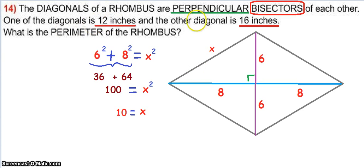So if the diagonals are 12 and 16, then half of 12 is 6, half of 16 is 8.